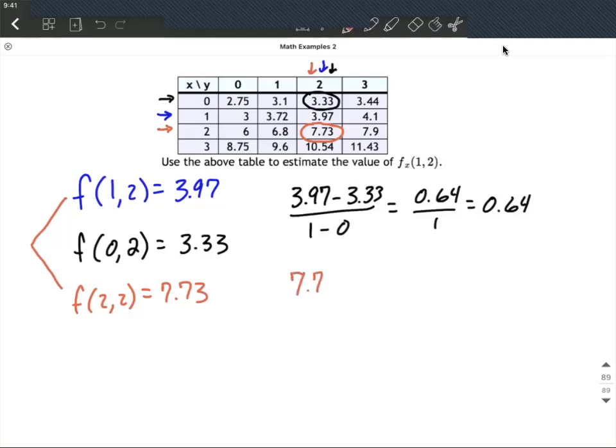7.73, the output, minus 3.97, that output, divided by 2 minus 1, our x values, here in the denominator.